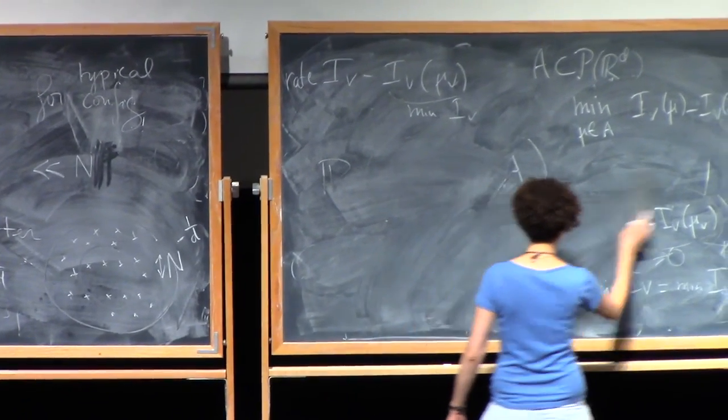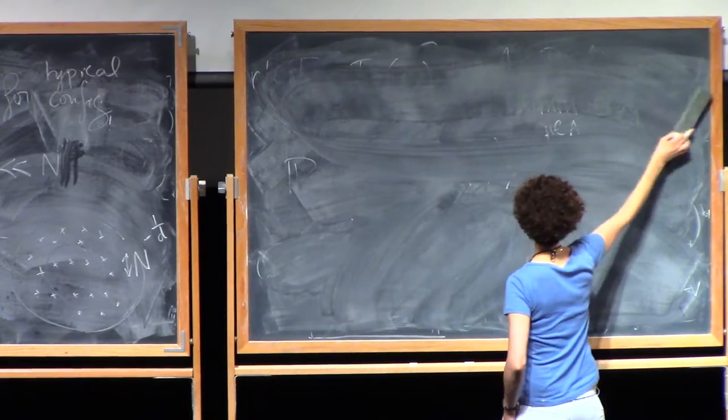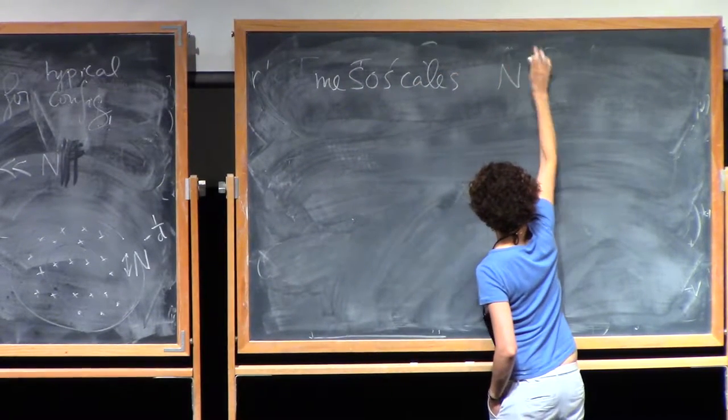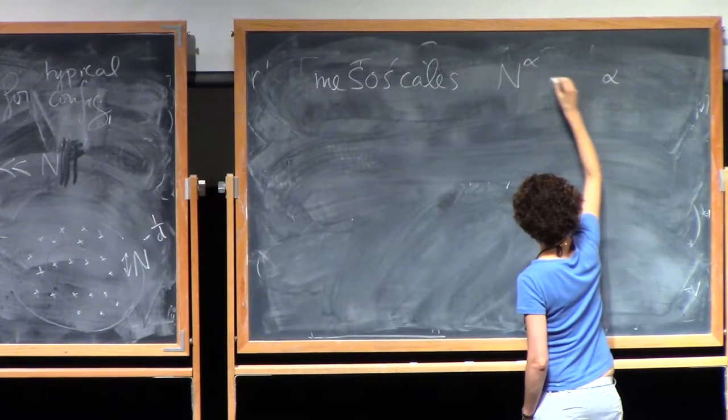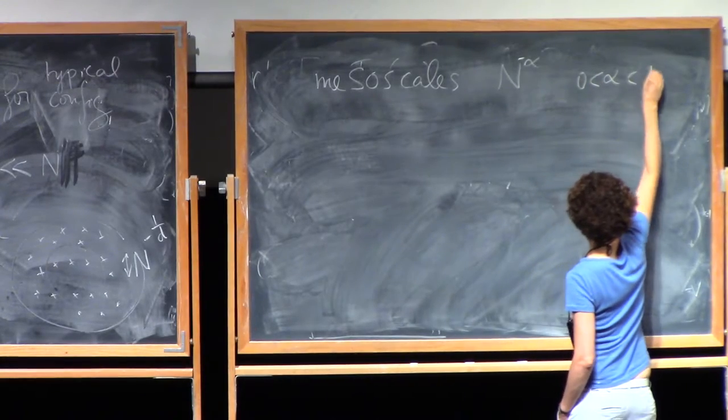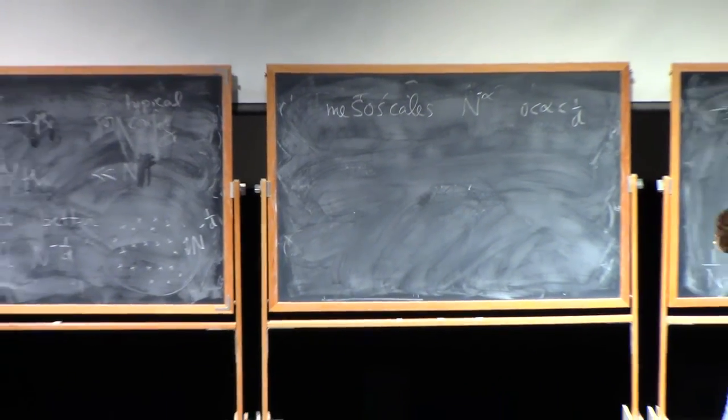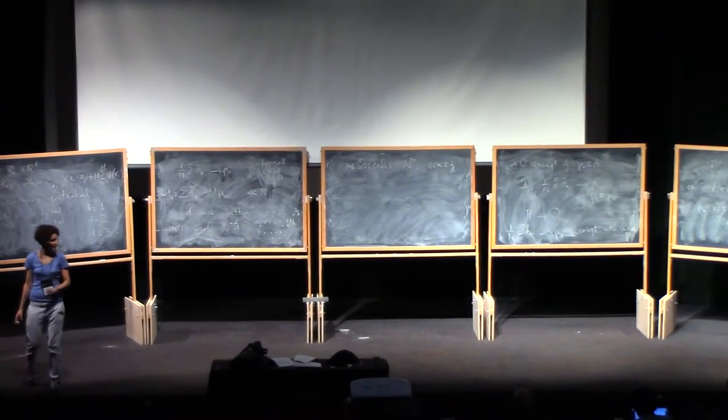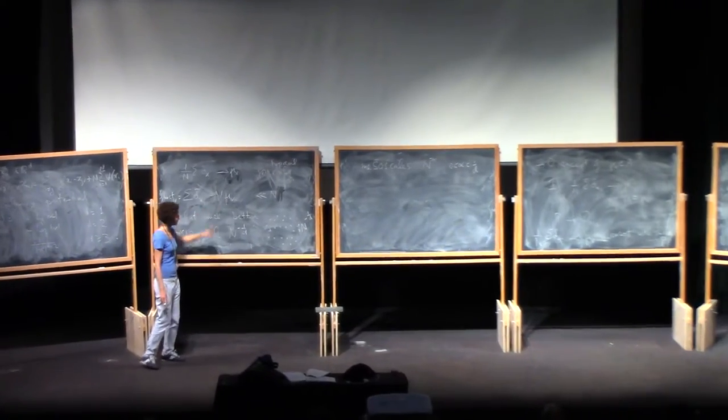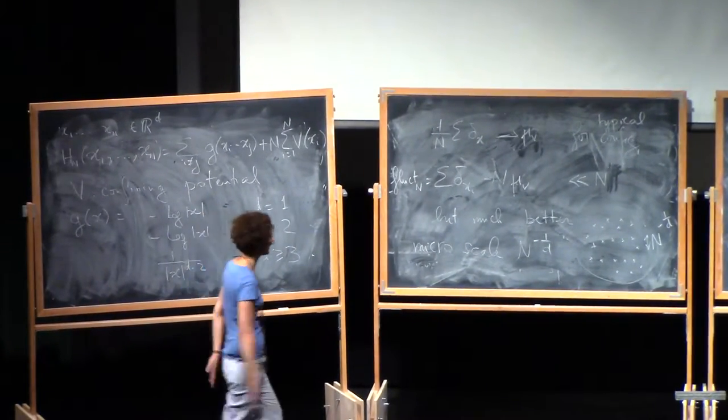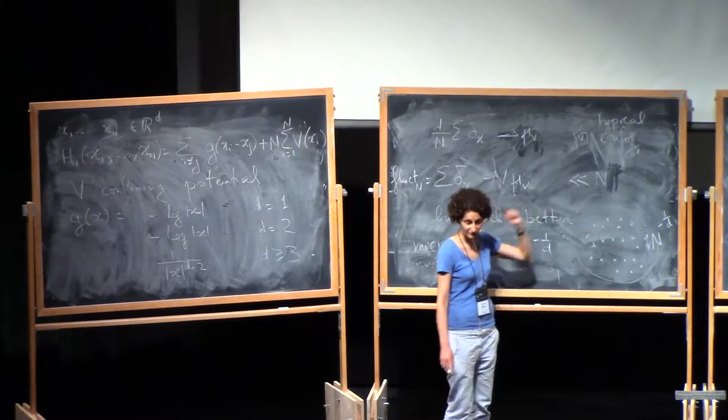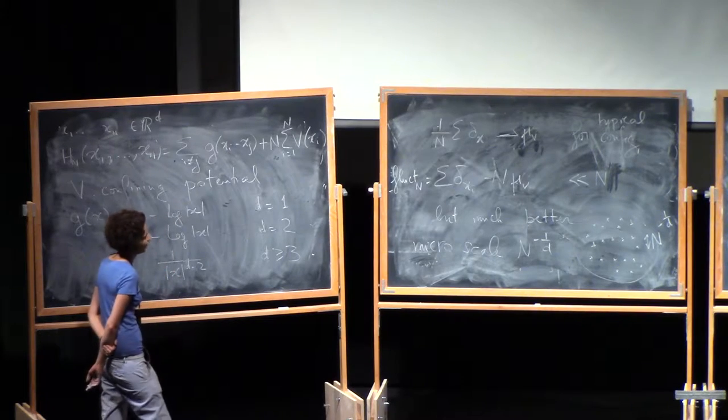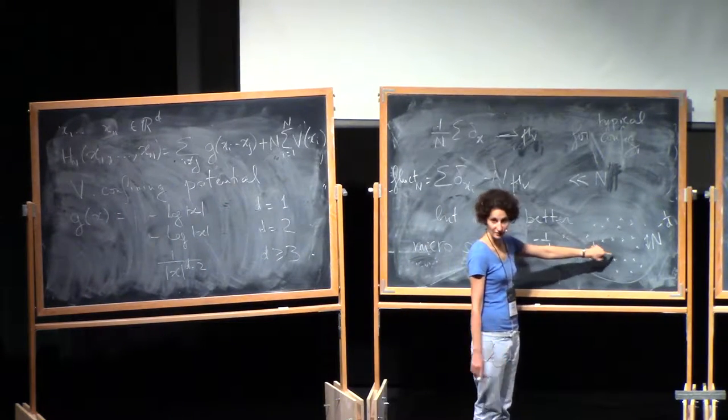The mesoscopic scales are all the scales in between. So there are all the scales n to the alpha, where alpha is between 0 and 1 over d. So if you look at small boxes there, is it true that the configuration is well approximated by the equilibrium measure? Can we find a better order than n for the difference? Can we even find limiting laws, like central limit theorems?